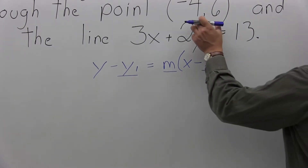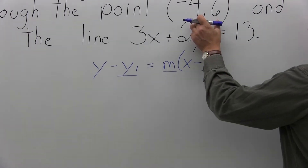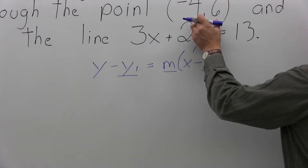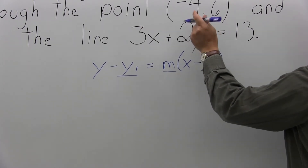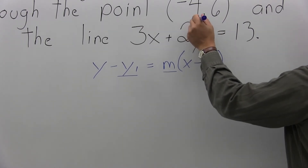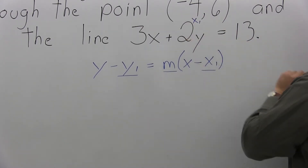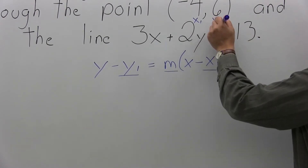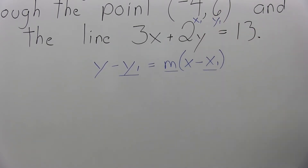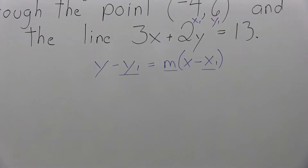The given point, negative 4, 6, will be the x1 and y1 values. The negative 4 will be x1 — it's the x coordinate. The 6 will be y1 — it's the y coordinate.